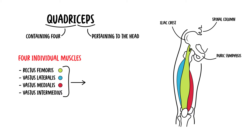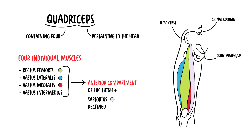These muscles make up the anterior compartment of the thigh, together with sartorius and the pectineus. In addition to these, the end of the iliopsoas muscle passes into the anterior compartment.